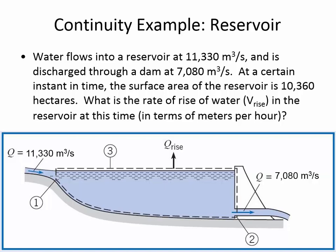Here, what we know is the surface area of the reservoir is given as 10,360 hectares. The flow rate in is 11,330, and there's a flow rate out. We're going to apply the Reynolds transport theorem — comparing in and out — to determine if there is a positive or negative accumulation. We need to find q_rise through subtracting the in versus the out, then translate that into the velocity that the fluid is rising in meters per hour.